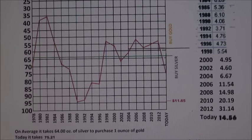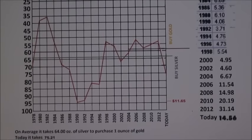So I figured I'd pull out the charts and this is the silver to gold ratio. If you look, the average is 64 ounces of silver to equal one ounce of gold since 1978. Today it takes 75.2 ounces of silver to buy one ounce of gold.